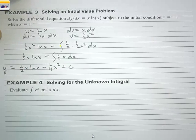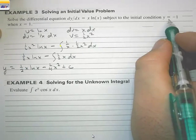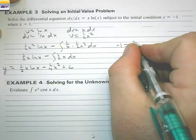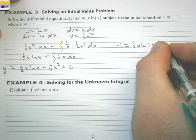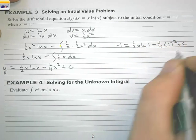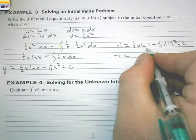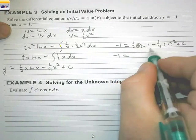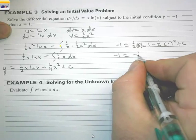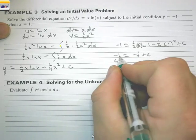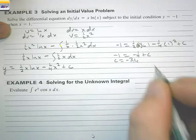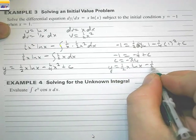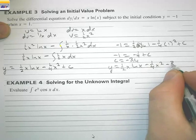So y equals (1/2)x²·ln(x) minus (1/4)x² plus C. Now we apply the initial condition y equals negative 1 when x equals 1. We get negative 1 equals (1/2)(1)·ln(1) minus (1/4)(1)² plus C. Since ln(1) equals 0, that term vanishes, giving negative 1 equals negative 1/4 plus C, so C equals negative 3/4. Therefore y equals (1/2)x²·ln(x) minus (1/4)x² minus 3/4.